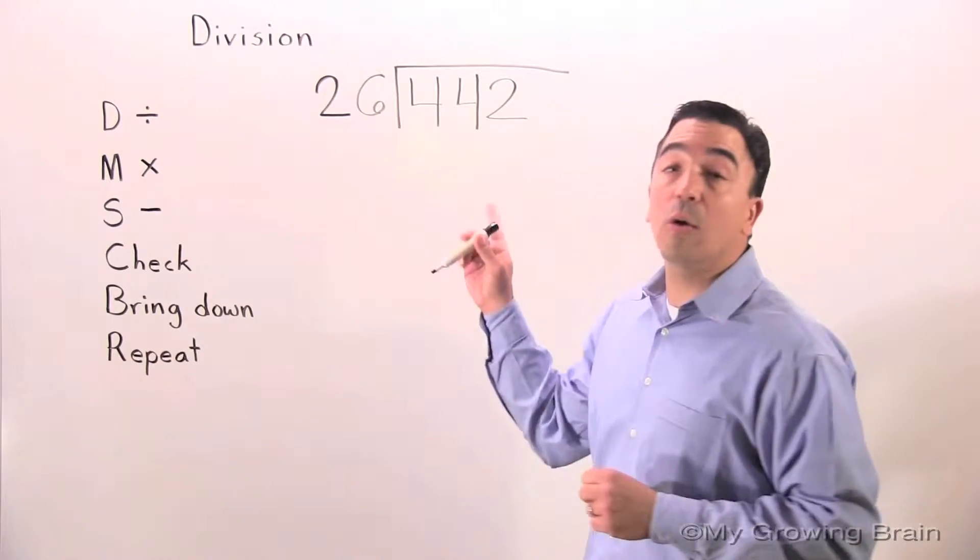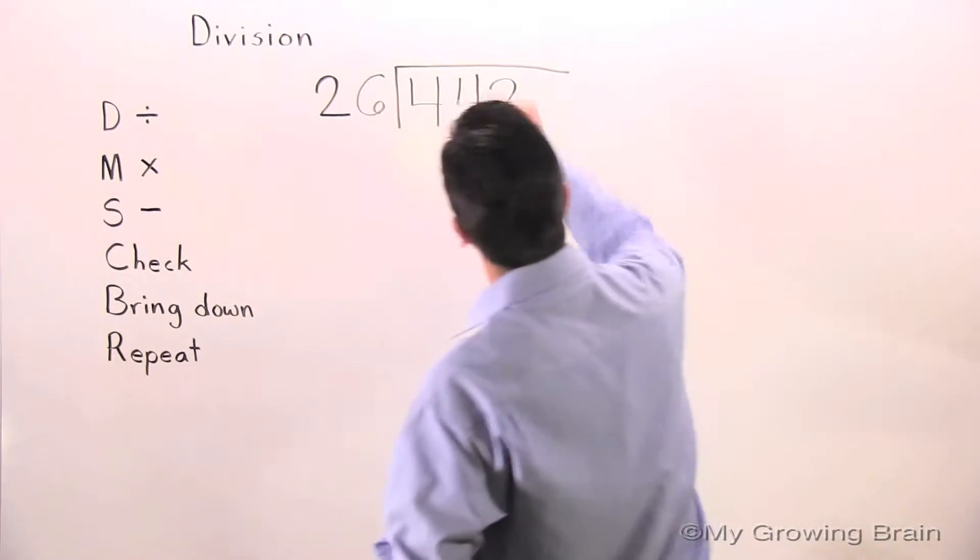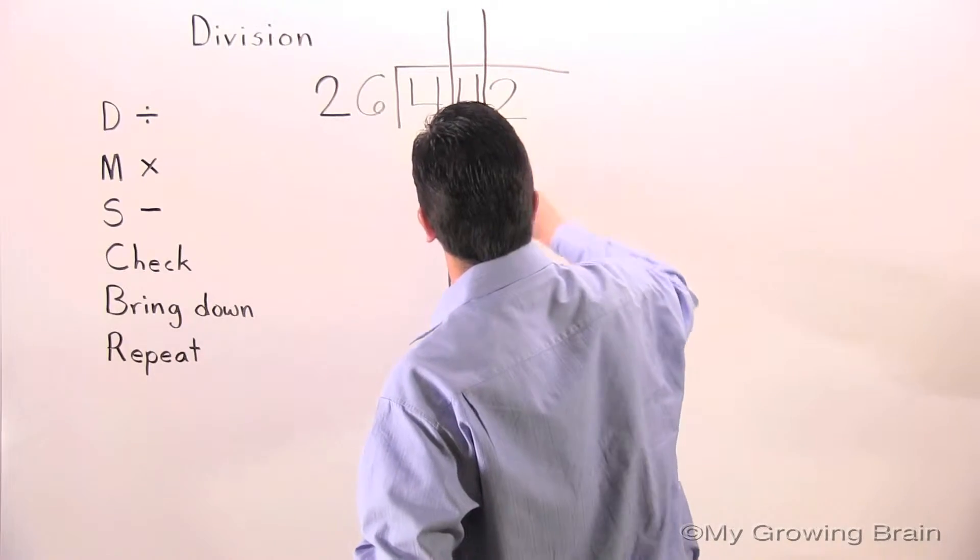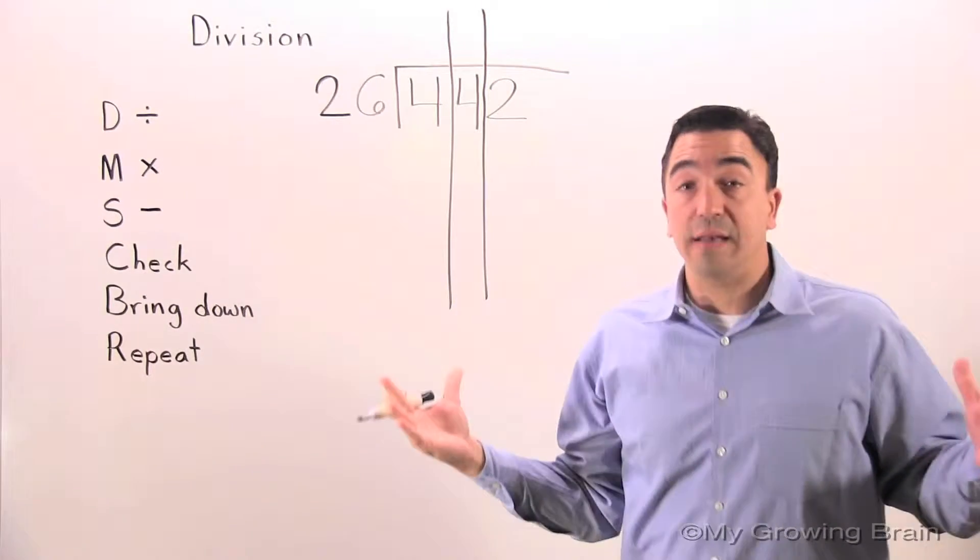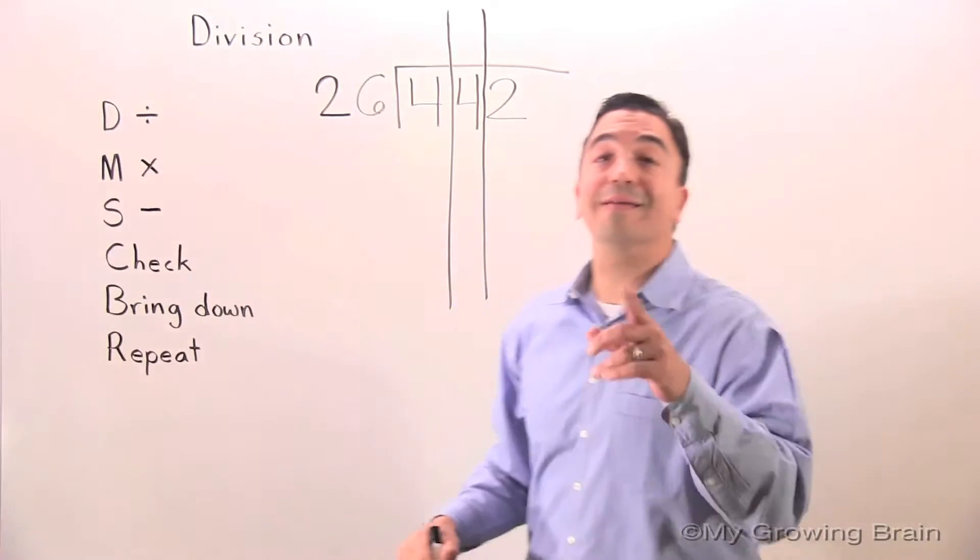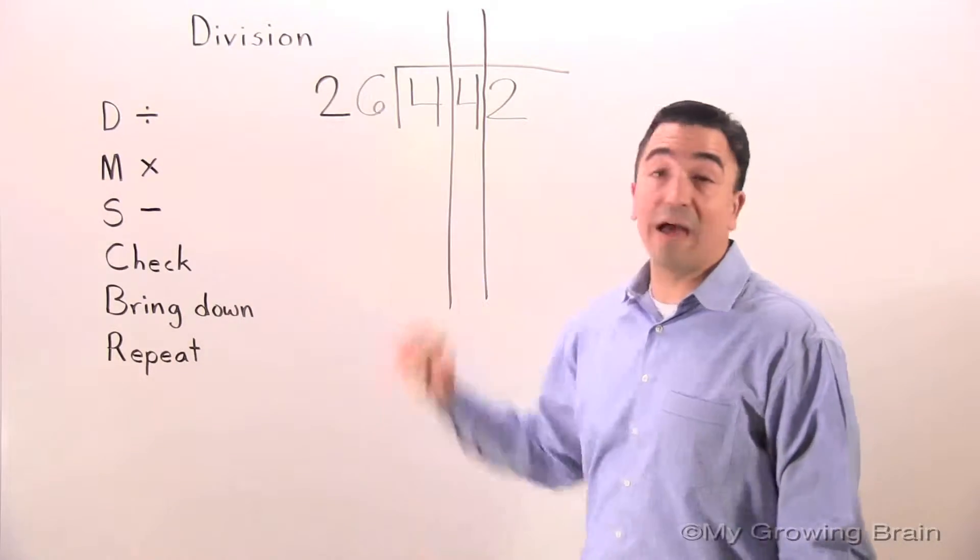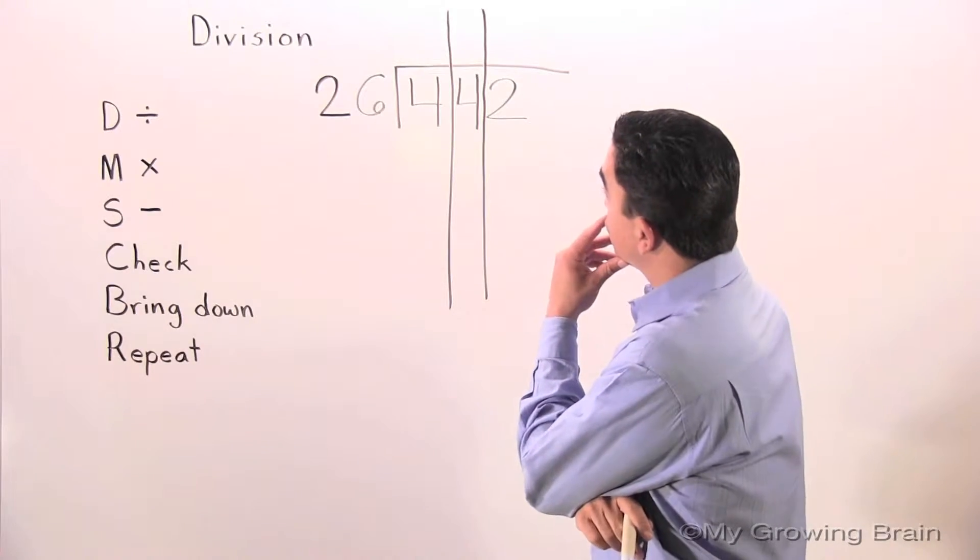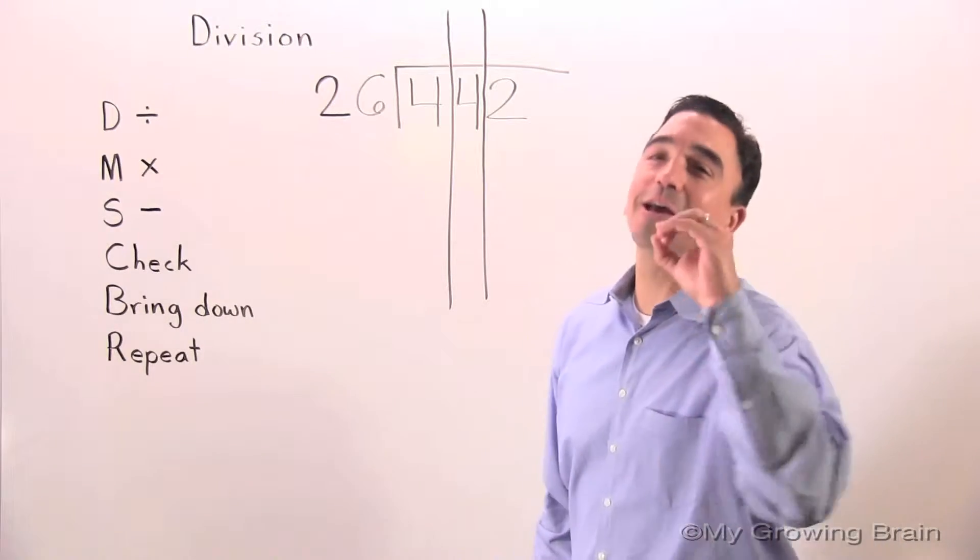The first thing I'm going to do is organize my problem. All right. I think we're ready to go. Step 1. Divide 4 divided by 26 or 26 into 4. Can't do it! Use a 0.